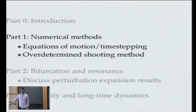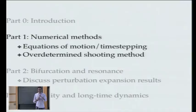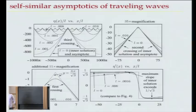Regarding Amick-Toland: the statement is, there exists a solution — he doesn't know about uniqueness — but there exists a solution with a 120-degree corner. And then there's another result about what happens as you approach that solution. This was done by Longuet-Higgins and Fox in the 70s, doing an asymptotic expansion as the crest sharpens.